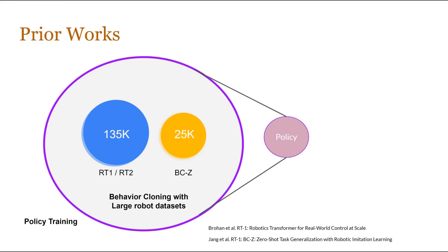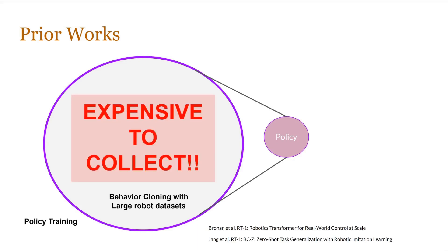A popular paradigm to train such goal-conditioned manipulation policies is by collecting large robot datasets for behavior cloning. Indeed, several prior works have attempted exactly this by collecting hundreds of thousands of robot trajectories. However, such large robot datasets are expensive to collect and still suffer from lack of diversity due to operational constraints.